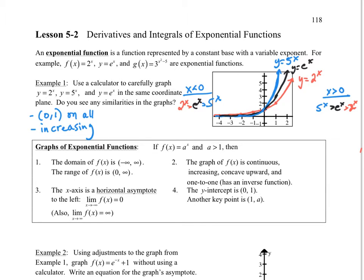I have the three graphs here now. This one is 2^x, e^x, and 5^x. Notice that if x is greater than 0, 5^x is greater than e^x, which is greater than 2^x, which I think is pretty obvious.